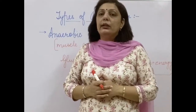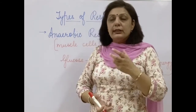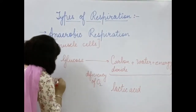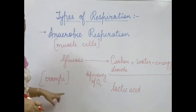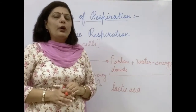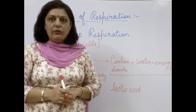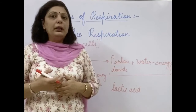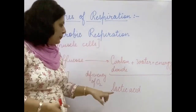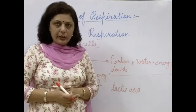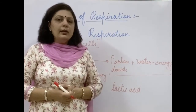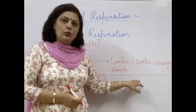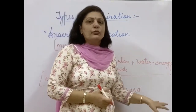This is the general process of how anaerobic respiration occurs in muscle cells during oxygen deficiency — glucose breaks down into lactic acid, which gets deposited in the muscle cells, leading to muscle cramps. The person can overcome these cramps through hot water bath or massage, because rubbing increases blood circulation and oxygen supply, which breaks down the lactic acid into carbon dioxide and water, providing relief.